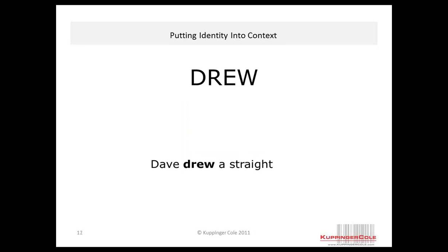But suppose we add more words: 'Dave drew a straight line.' Now we're no longer talking about cards — we're talking about an infinite series of connected points that, once extended infinitely, will never cross themselves. It's a straight line, a 180-degree angle if you will. Once we look at the words surrounding 'drew,' we know the exact context, we know the exact meaning, we know what we're talking about.